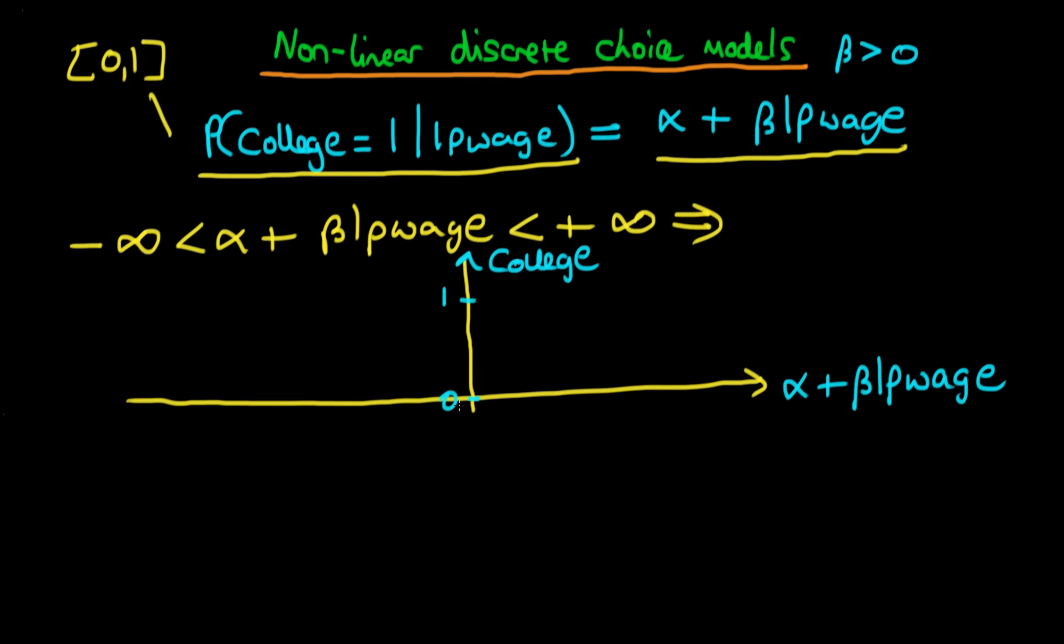We've already spoken about the fact that college, whether an individual goes to college, is a one-zero variable. But I'm actually going to talk about the probability that an individual goes to college, so we're going to look at the probability which can also lie between zero and one.